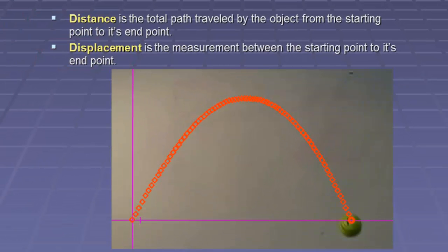Well, let's take a look at our tennis ball again. The distance is the total path traveled. The total path traveled is the red line. That was the 1.37 meters.